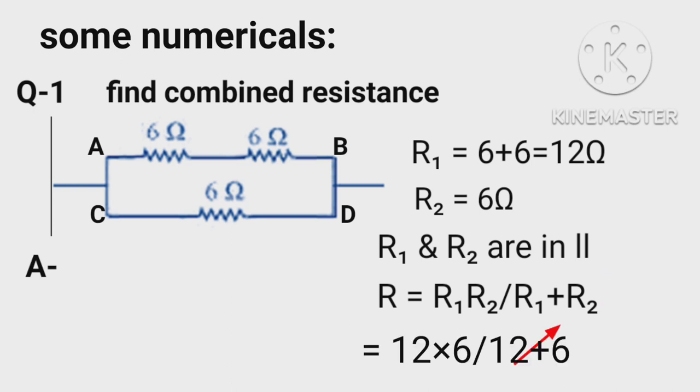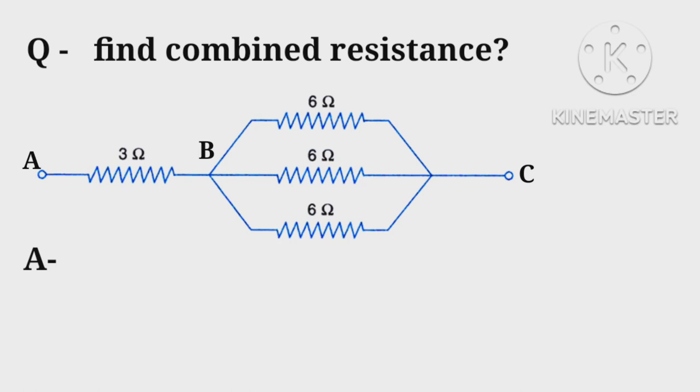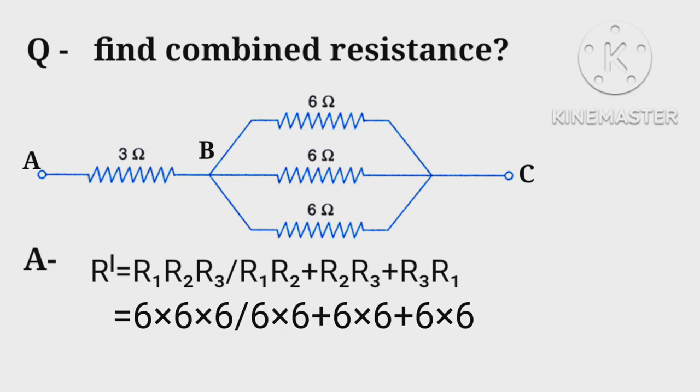Resistances in BC are in parallel. Therefore R equals R1 R2 R3 upon R1 R2 plus R2 R3 plus R3 R1. R1 equals 6 times 6 times 6 upon 6 times 6 plus 6 times 6 plus 6 times 6 equals 216 upon 108 equals 2 ohms.